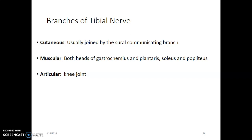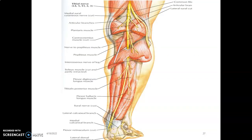There is also an articular branch to the knee joint. So those are the branches of the tibial nerve: a cutaneous branch joining the sural communicating branch, muscular branches to gastrocnemius, plantaris, soleus, and popliteus, and an articular branch to the knee joint. The tibial nerve arises from the upper border of the popliteal fossa and descends, giving muscular branches to gastrocnemius and soleus.